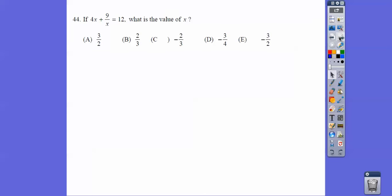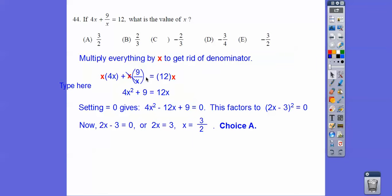Here what I did is I multiplied everything by X, and it gave me this equation. Then we have a quadratic, we want to make it equal to 0. This is a perfect square trinomial. This factors to 2X minus 3 squared. Set that equal to 0, we get 3 halves.